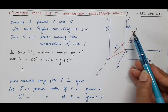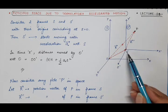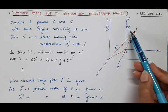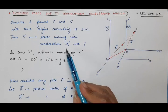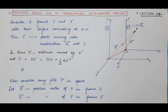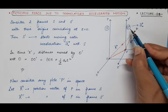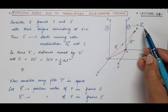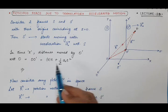One is frame S and another one is frame S', having origins at O and O'. Initially at time t = 0, the origins of the two frames of reference were coinciding. Then frame S' starts moving with acceleration A0 with respect to frame S. The distance moved by origin O' with respect to O is measured by ut + ½A t², and here A = A0, so we have ½A0 t² + ut.